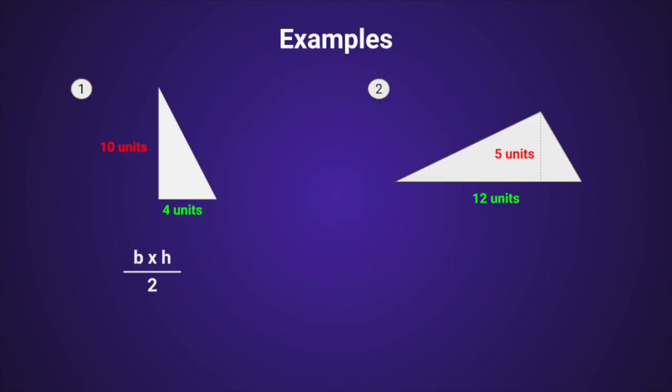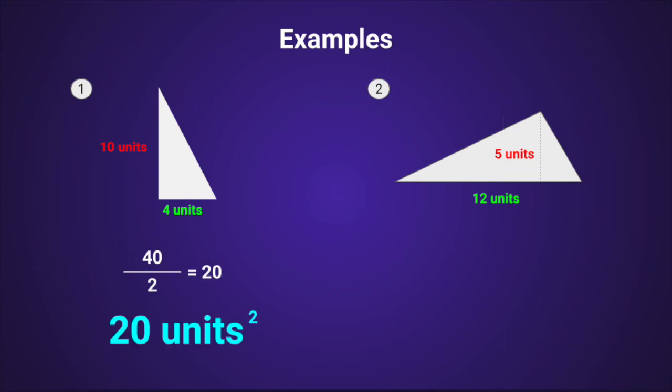Alright, let's go through some examples. In the first triangle, the base is 4 and the height is 10. 4 times 10 is 40, but don't forget to divide by 2. 40 divided by 2 is 20. So the area is 20 units squared.